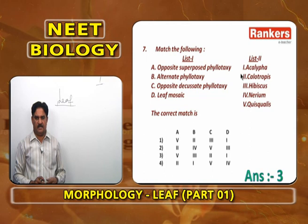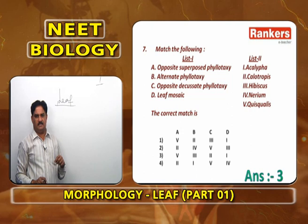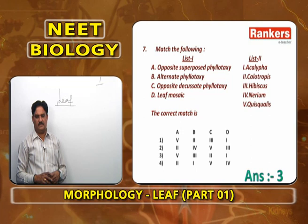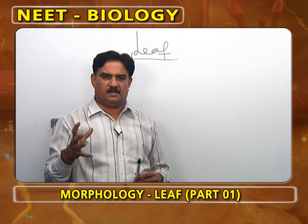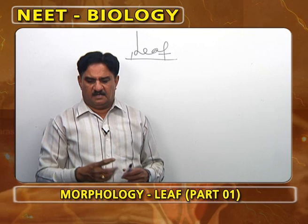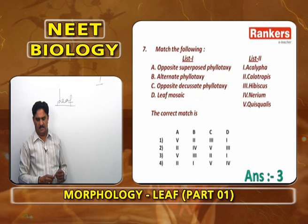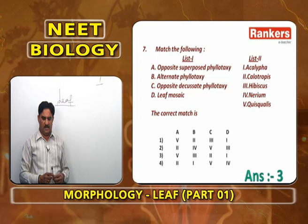Leaf mosaic phyllotaxy is found in Achillea. In leaf mosaic phyllotaxy, it is an alternate type but all leaves receive equal sunshine: lower leaves have long petioles and are broad, upper leaves have short petioles and are small, with upper leaves arranged in the gaps left by the lower large leaves. So the answer is 5, 3, 2, 1.